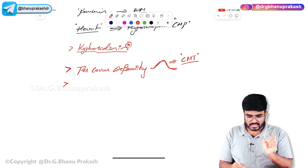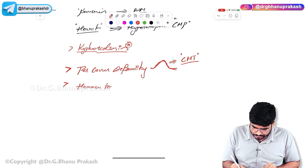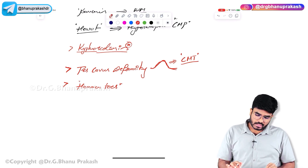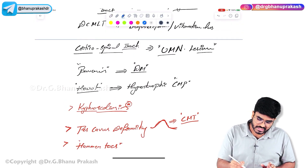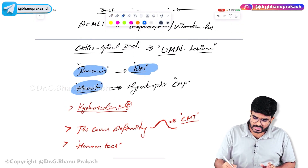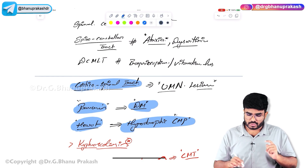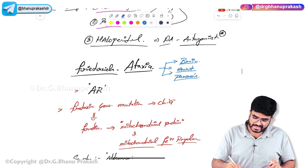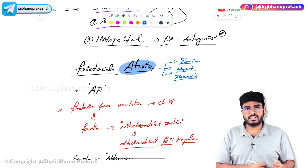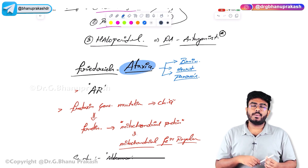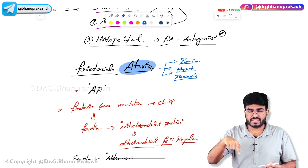These patients also have hammer toes. To summarize the key features: kyphoscoliosis, pes cavus deformity, hammer toes, diabetes mellitus from pancreatic insufficiency, hypertrophic cardiomyopathy, spinal cord degeneration, and cerebellar degeneration. Ataxia results from cerebellar degeneration, and upbeating nystagmus is seen due to cerebellar involvement.